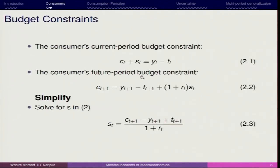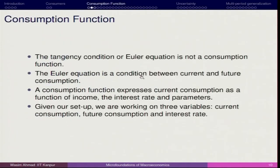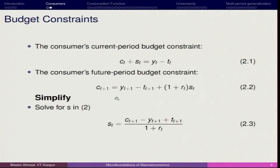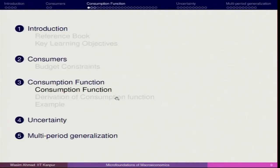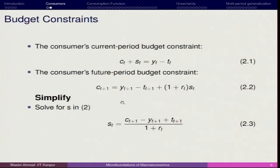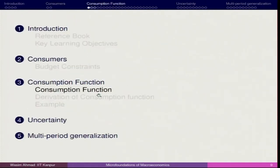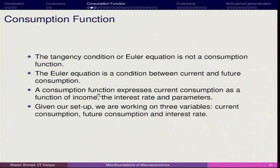We had derived the budget constraint and then went by having the tangency condition. Here was the budget constraint and here was the saving function that we derived in the last example. Now, regarding the consumption function: the Euler condition states that the marginal utility of current consumption equals beta multiplied by the marginal utility of future consumption times (1 + r), the reward for future consumption, and consumers decide accordingly.